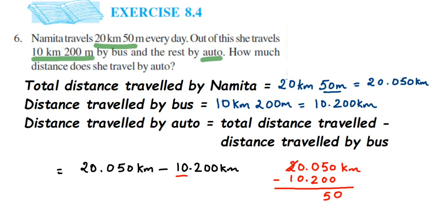We have a zero next, so we borrow from the 2, which becomes 1. The next number becomes 9, and zero becomes 10. So 10 minus 2 is 8. After the decimal: 9 minus 0 is 9, and 1 minus 1 is 0. We get the answer: 9.850 kilometers. That is the distance Namita travels by auto.